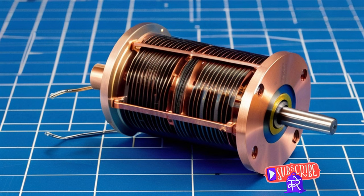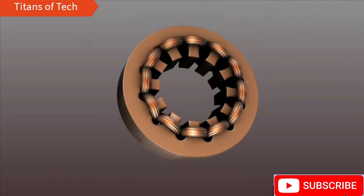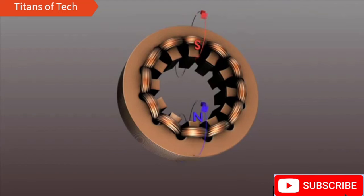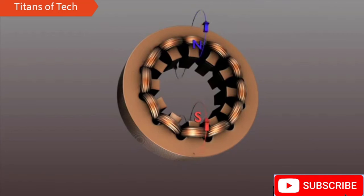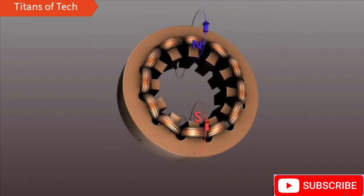To understand how an asynchronous motor works, we need to first understand its basic parts. Let's start with the stator. Picture a stationary outer component that contains windings or coils. These coils are connected to a power source, and when electricity passes through them, they create a rotating magnetic field. This magnetic field is the driving force that sets everything else in motion.